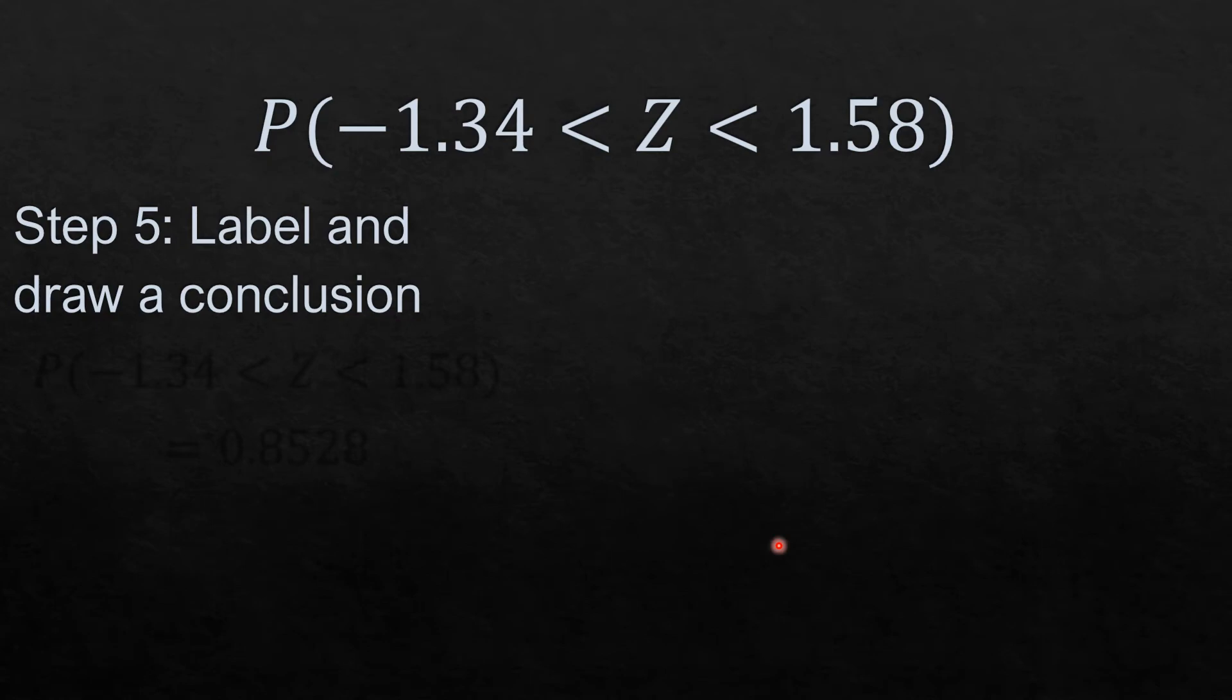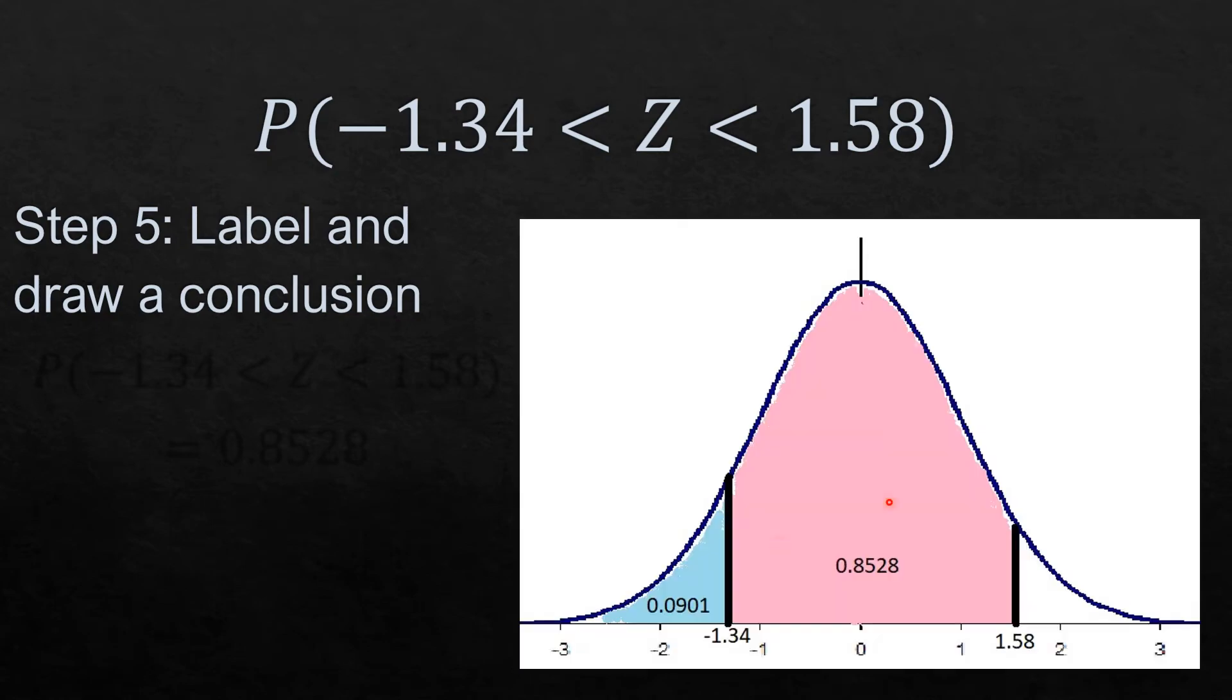To illustrate further, we have negative 1.34, and anything below or to the left of this has area 0.0901, while for 1.58 that is 0.9429. What I did is I subtracted 0.9429 by 0.0901.